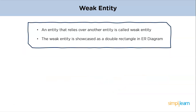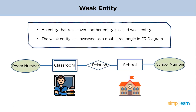An entity that depends on another entity is called a weak entity, showcased as a double rectangle in an ER Diagram. In the example, school is a strong entity because it has a primary key attribute — school number. Unlike the school, classroom is a weak entity because it does not have any primary key, and the room number attribute acts only as a discriminator and not a primary key.